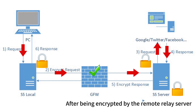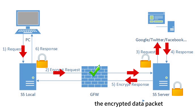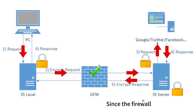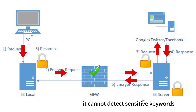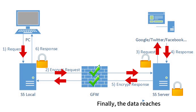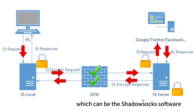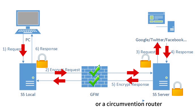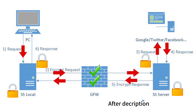After being encrypted by the remote relay server, the encrypted data packet passes through the grid firewall again. Since the firewall cannot identify obvious patterns and the data is not plain HTTP, it cannot detect sensitive keywords and can only choose to allow the traffic. Finally, the data reaches the local Shadowsocks server — which can be the Shadowsocks software installed on a computer, smartphone, or a circumvention router — and after decryption, the data packet is sent back to the local computer.